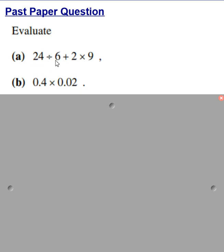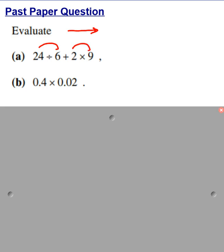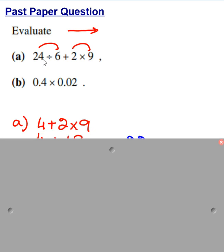Now if you look at this question, there are three operations. I'm talking about part A: division, addition, and multiplication. So first of all I will handle these two, because we handle division or multiplication whatever is coming first when we are reading numbers from left to right. After that I will handle this, and then I will add the two results.